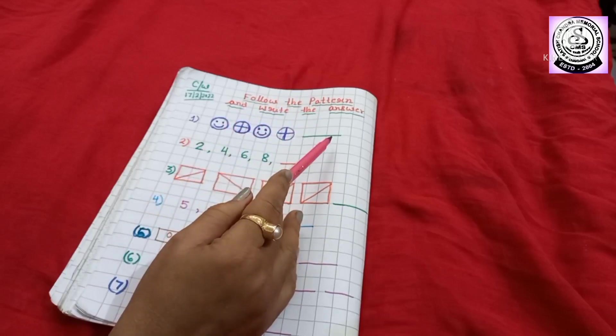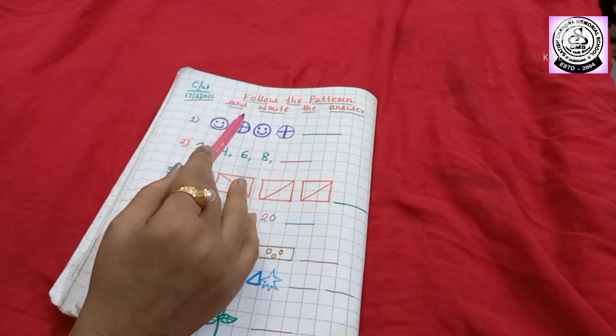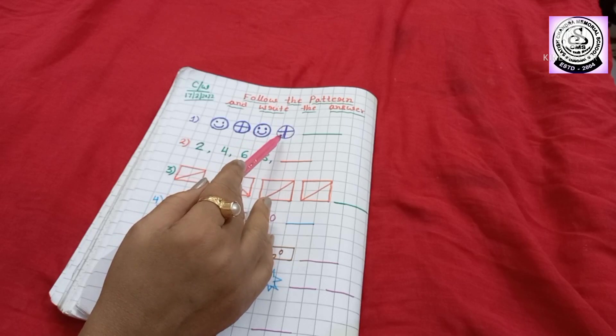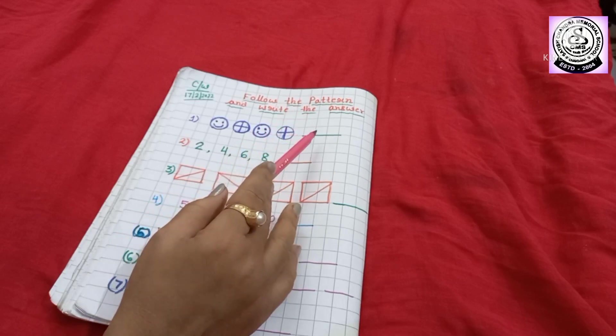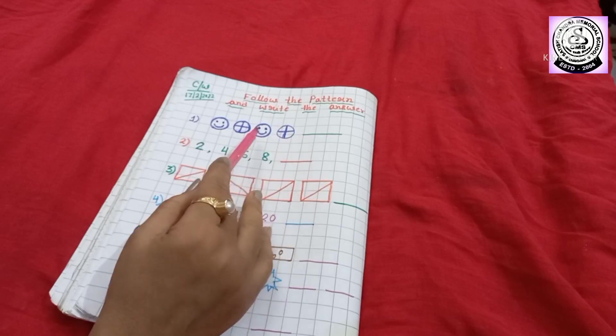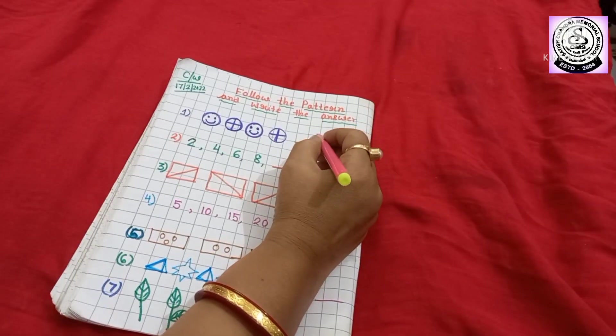What will come next? Smiley, then circle with the addition sign inside. Then again smiley, then again like this. So, what you have to draw? Yes, you are right. You have to draw one smiley. Now I am going to draw.